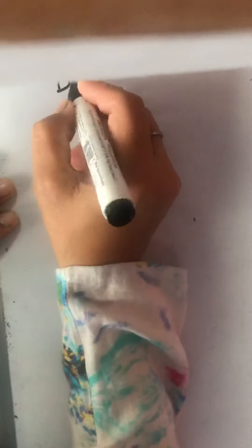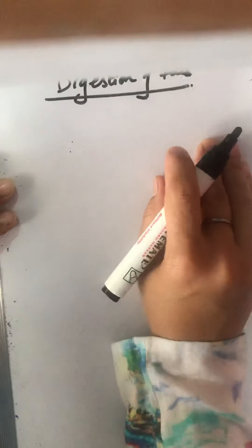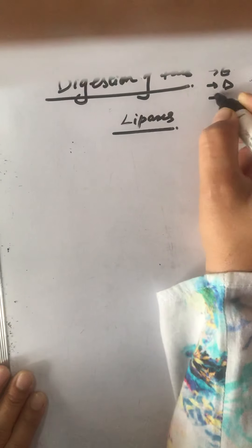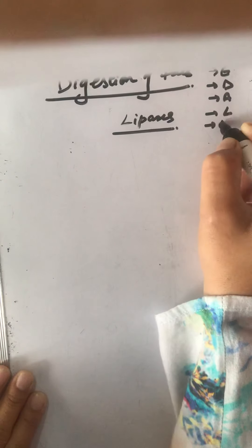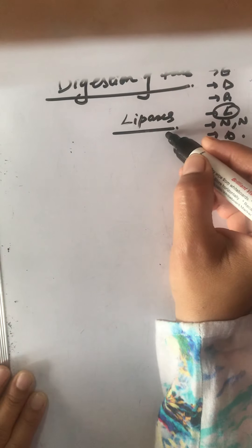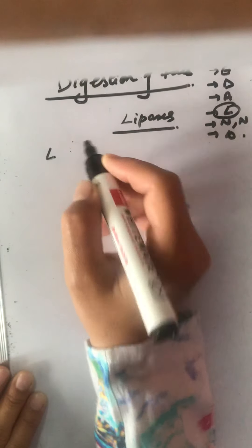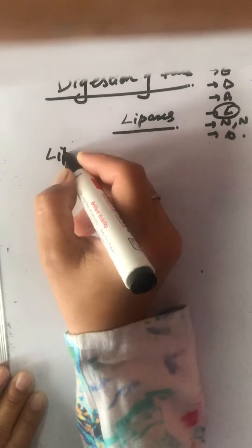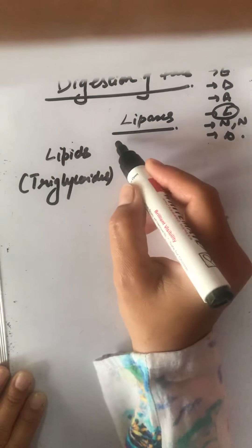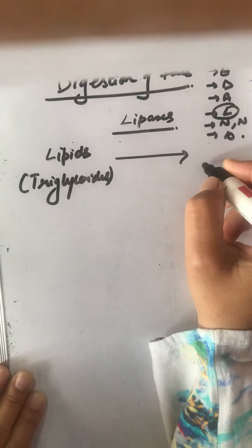Moving to the digestion of fats in the small intestine: fats are broken down by lipases. We covered this when doing intestinal juice enzymes — enterokinase, dipeptidases, aminopeptidases, lipases, nucleotidases, nucleosidases, and disaccharidases. The lipase is responsible for the conversion of triglycerides into diglycerides and fatty acids.